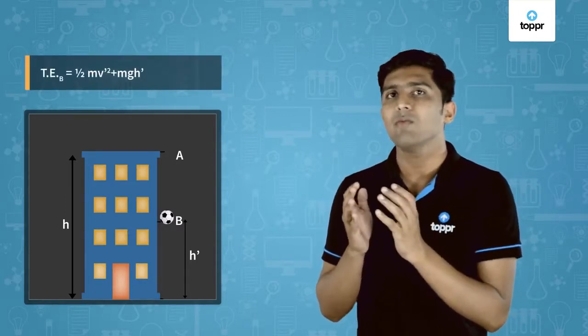Now let's drop the ball. As it is in free fall, the only force acting on the ball is the force of gravity. As the ball comes down, let's consider a point at the middle of the building and call it point B. At point B, the potential energy is less than at point A and the height is also less than H — let's call it H dash. The ball has also gained a velocity V. So at point B, the total energy is equal to half MV squared plus MGH dash. The kinetic energy gained is equal to the loss of potential energy.